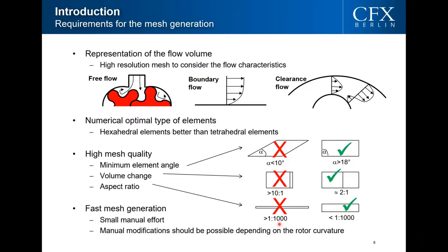For positive displacement machines, especially because of the tight clearances, a high mesh quality is required. From experience, the minimum element angle should be above 18 degrees, the volume change should be below 10%, and the aspect ratio should not exceed 1000. These values are not written in stone and depend on the solver, but you have to achieve a certain mesh quality. The goal is fast mesh generation with minimal manual effort without sacrificing that quality.